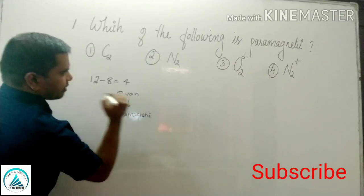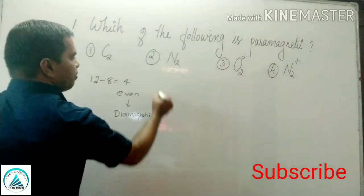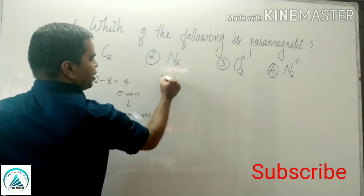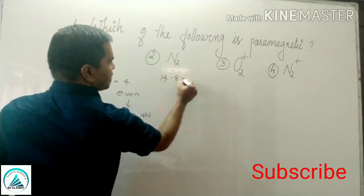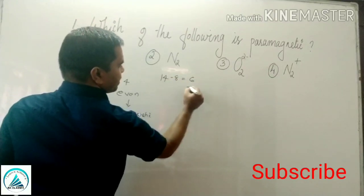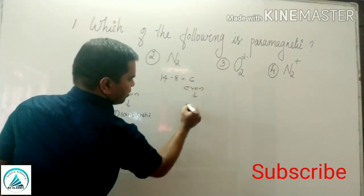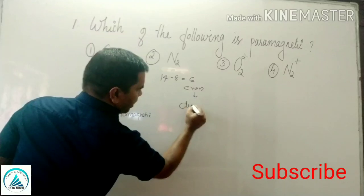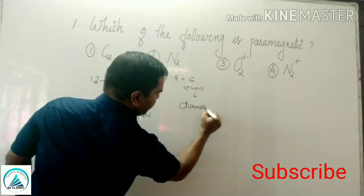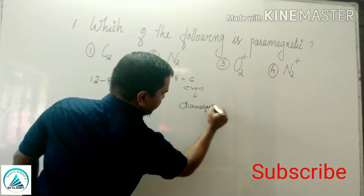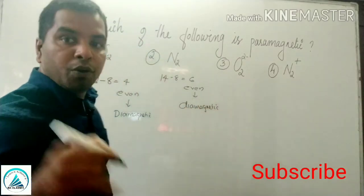N2: total number of electrons 14. 14 minus 8 equals 6. Even number, so the molecule is diamagnetic.